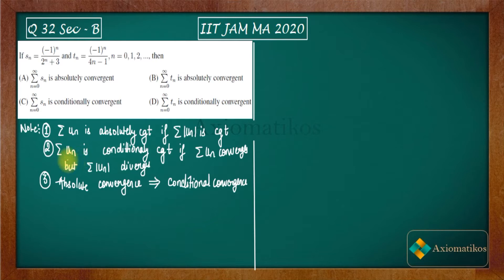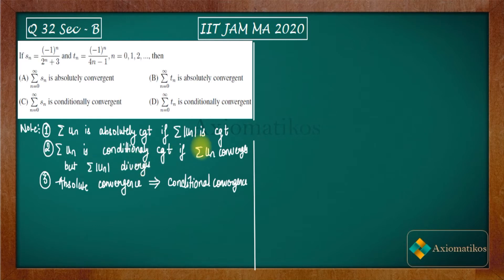Note two says summation Un is conditionally convergent if summation Un converges but summation mod Un diverges. So these two notes suggest that conditional convergence means summation mod Un should diverge and summation Un should converge — without modulus it should converge and with modulus it should diverge. Note three says absolute convergence implies conditional convergence — so this is very important.